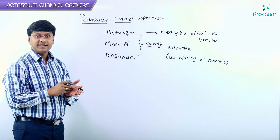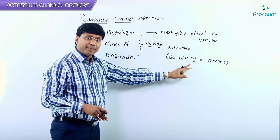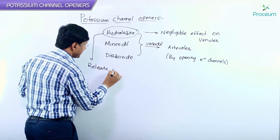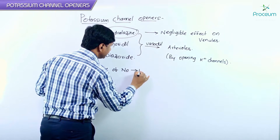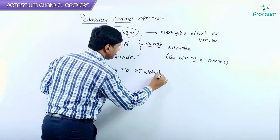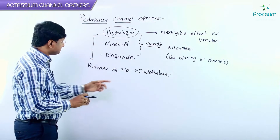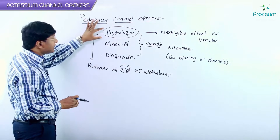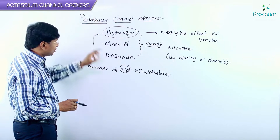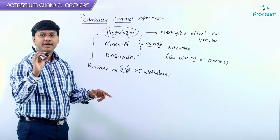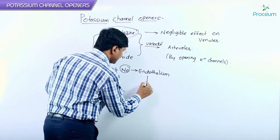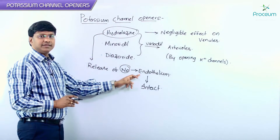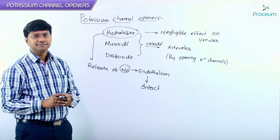If you take hydralazine, in addition to opening of the potassium channels, hydralazine also causes the release of nitric oxide from the endothelium of the blood vessel. Once this nitric oxide is released, it will also cause vasodilatation. But remember, in order for hydralazine to cause nitric oxide release, the endothelium should be intact. Only from the intact endothelium is nitric oxide released.